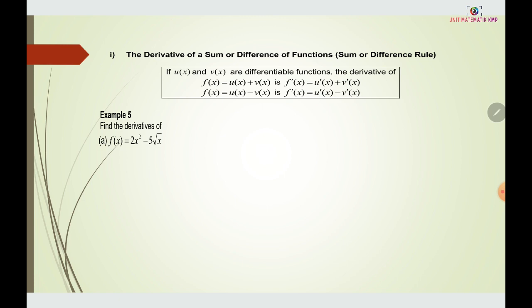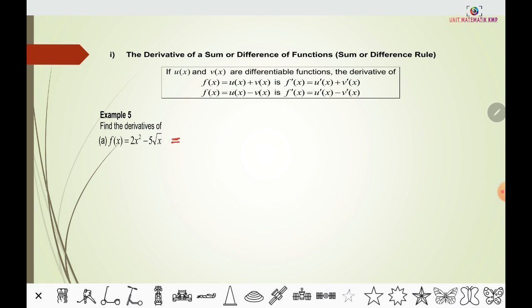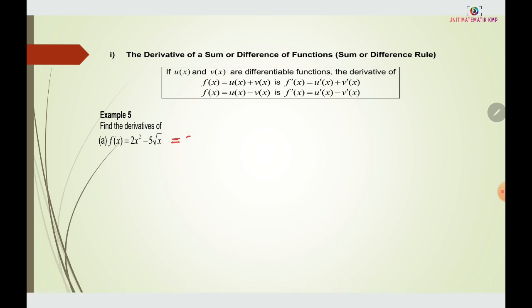For this example, we have f(x) = 2x² minus 5√x. First, we rewrite √x in terms of a power, so √x equals x to the power of 1/2. So we have f(x) = 2x² minus 5x^(1/2).